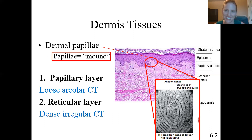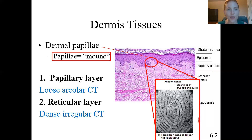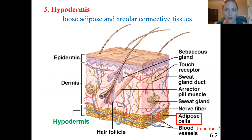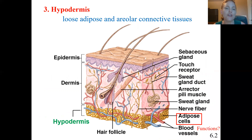To summarize what you need to know: the structure of the dermal papillae, how that relates to the papillary layer, and the specific tissue types found in each layer of the dermis.